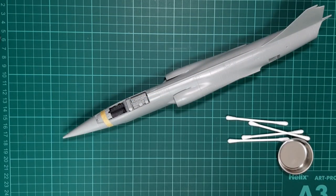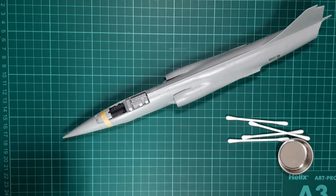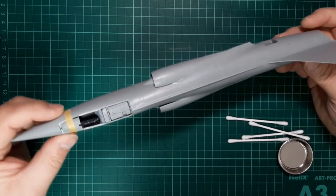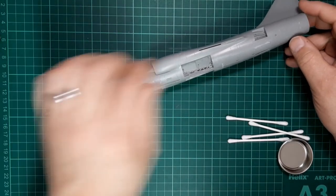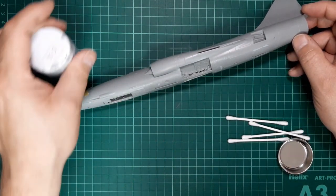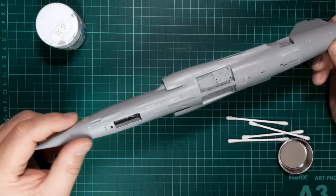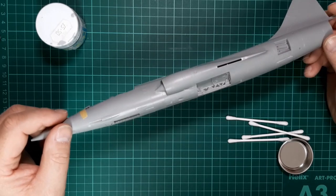Welcome back to the Kinetic F-104J build in 1/48 scale. At the end of the last video, we got the fuselage together and just off camera, I applied some diluted Mr. Surfacer 500 to some of the small gaps and cracks in the belly plates.